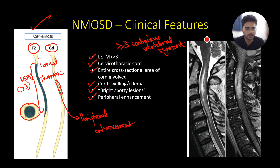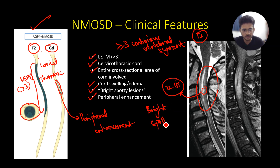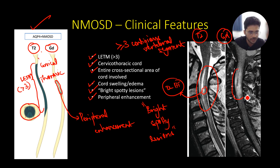On the actual MRI T2 images you can see longitudinally extensive transverse myelitis, and within the lesion there is a T2 hyperintense lesion — this is known as the bright spotty lesion, a characteristic neuroradiological sign for NMOSD-related myelitis. On the contrast images there is a peripheral enhancement pattern.